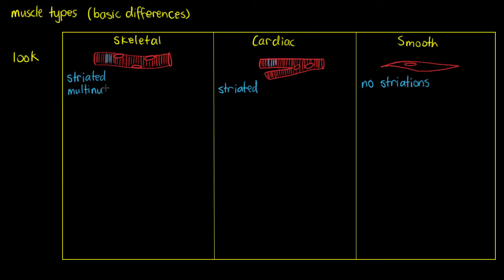The next differentiating feature is the number of nuclei. Skeletal muscle is multinucleate, with many nuclei throughout the cell. Cardiac cells are usually uni- or binucleate, meaning they usually only have one or two — they're not big enough to need more. Smooth muscle is always uninucleate, having only one nucleus unless there's some kind of intracellular mutation.